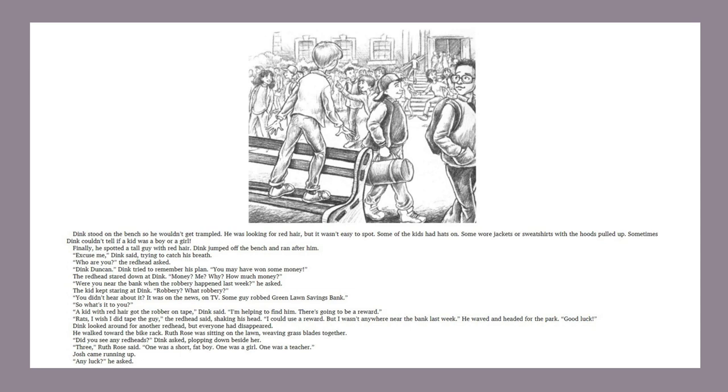Who are you? the redhead asked. Dink Duncan. Dink tried to remember his plan. You may have won some money. The redhead stared down at Dink. Money? Me? Why? How much money? Were you near the bank when the robbery happened last week? he asked. The kid kept staring at Dink. Robbery? What robbery? You didn't hear about it? It was on the news, on TV. Some guy robbed Greenlawn Savings Bank. So what's it to you? A kid with red hair got the robber on tape, Dink said. I'm helping to find him. There's going to be a reward. Rats. I wish I did tape the guy, the redhead said, shaking his head. I could use a reward. But I wasn't anywhere near the bank last week. He waved and headed for the park. Good luck.